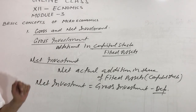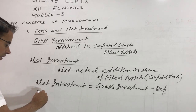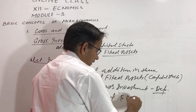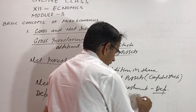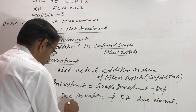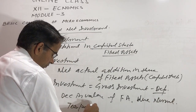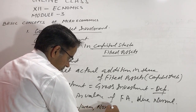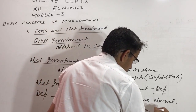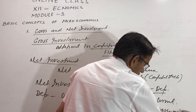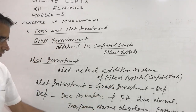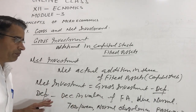Now, what is depreciation? Depreciation is the decrease in the value — a fall in the value — of fixed assets, constantly, due to normal wear and tear and normal obsolescence. When the value of a fixed asset falls or decreases due to any such reason, that decrease in the value of the asset is called depreciation.